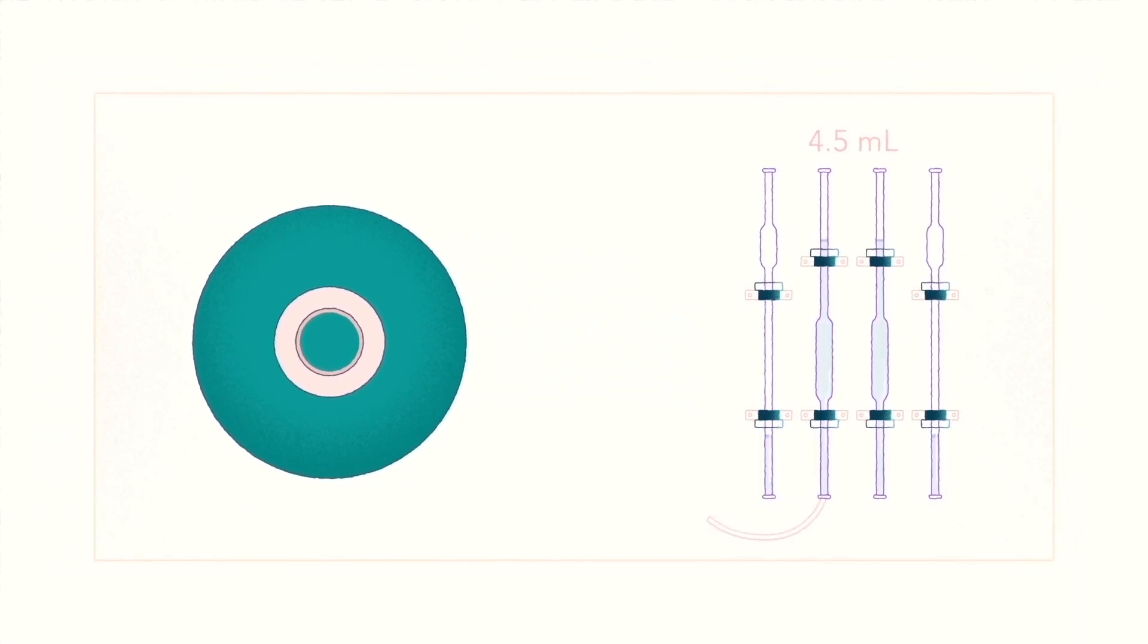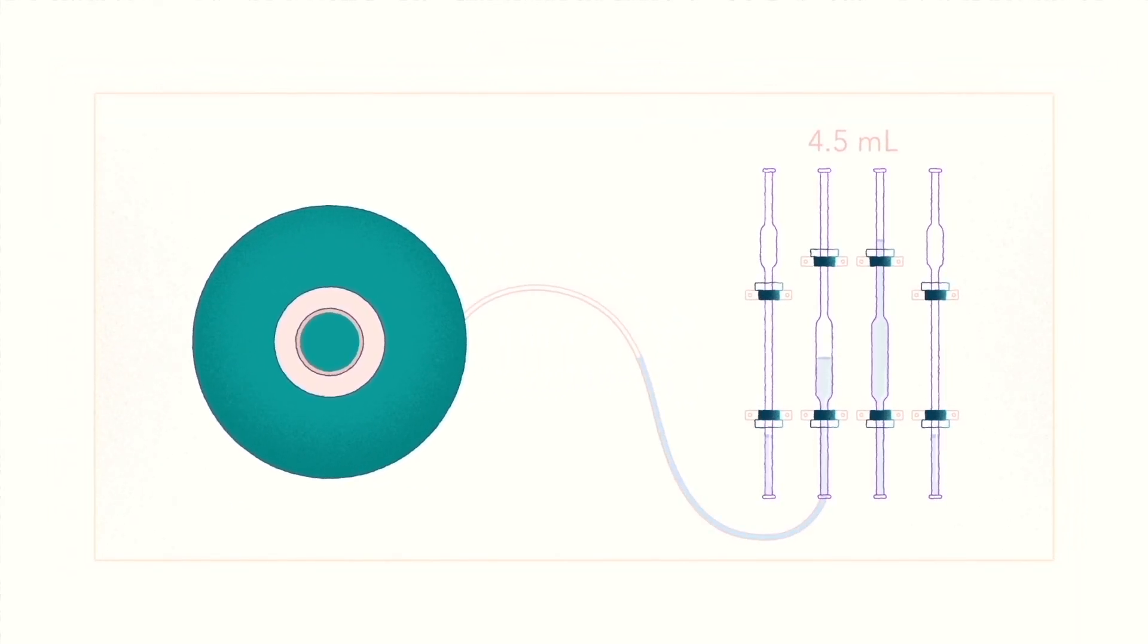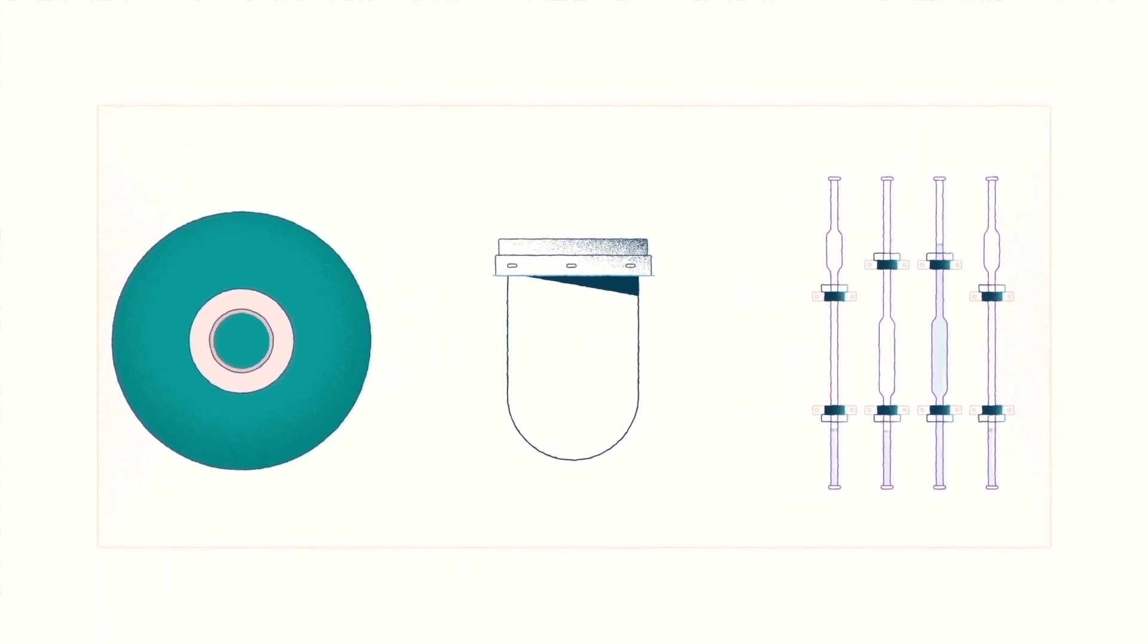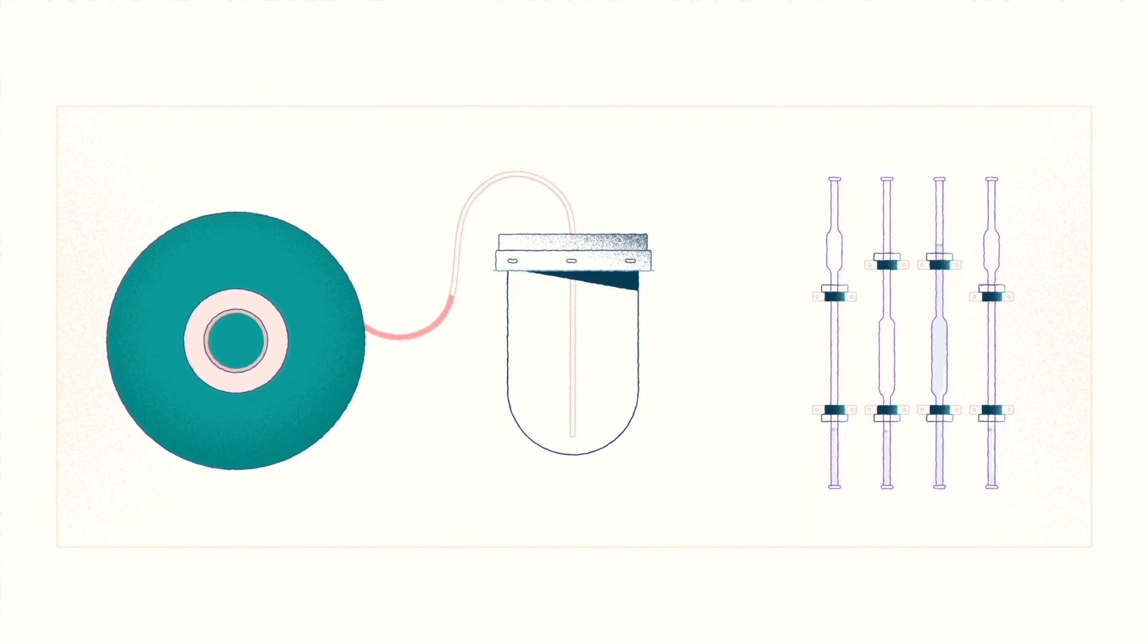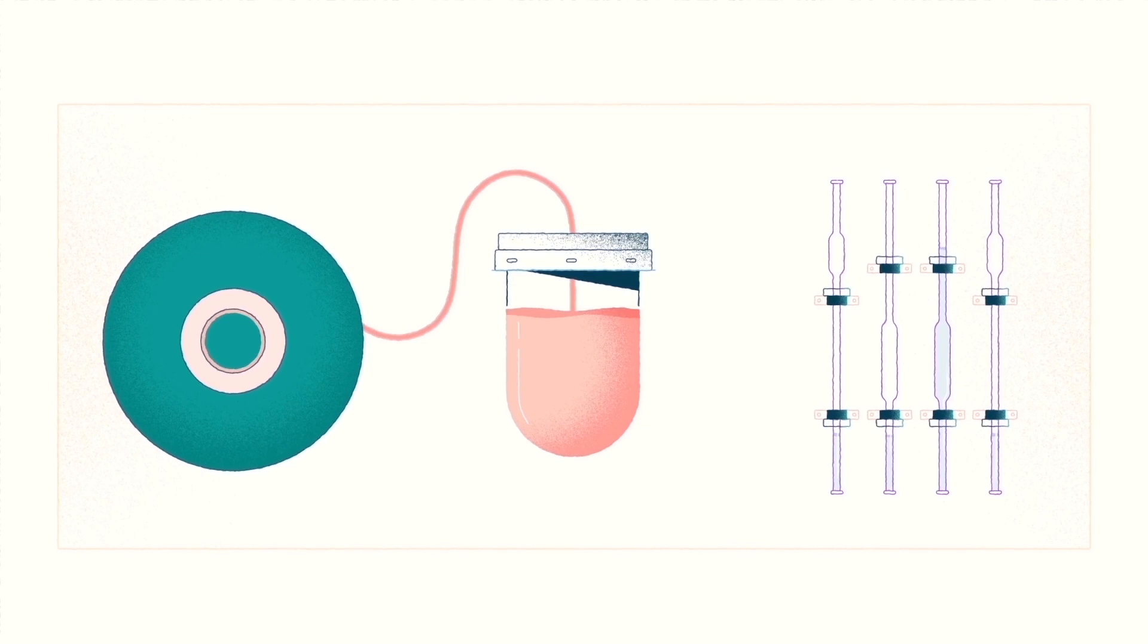The diluent pipette will dispense 4.5 milliliters of diluent, controlled by an air pump. Once the diluted sample reaches the mixing beaker, it will have a 1 to 200 dilution. This is the first step in the dilution process.